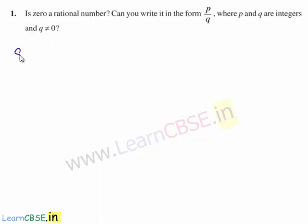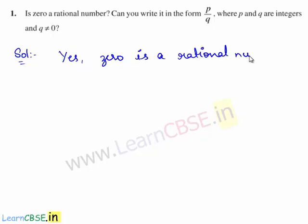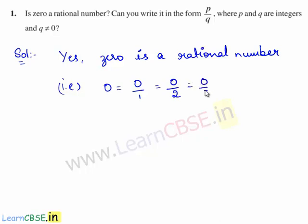The solution for this question is yes. 0 is a rational number because 0 can be written in the form of p by q. That is, 0 can be written as 0 by 1, or 0 by 2, or 0 by 3. 0 divided by any number gives 0, so 0 is a rational number.